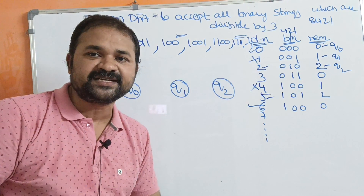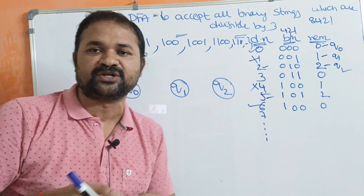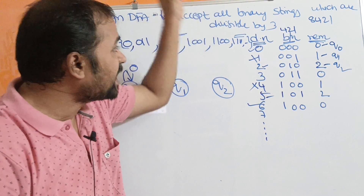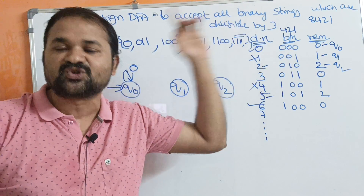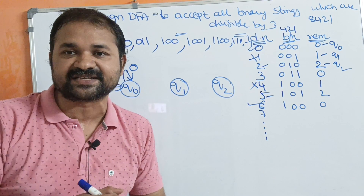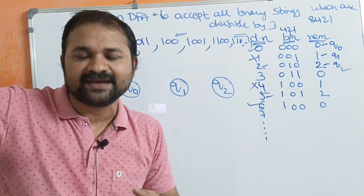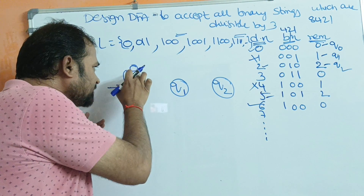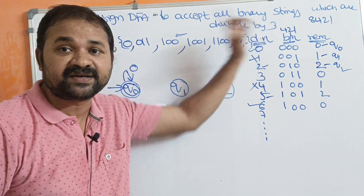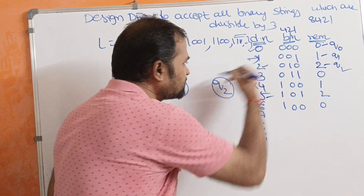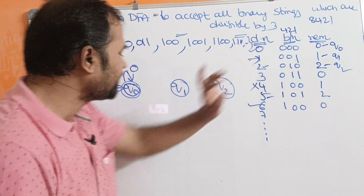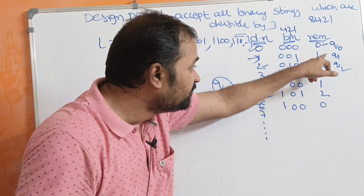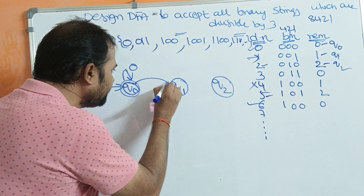Since 0 is divisible by 3, and 0 can be represented as a single 0, double 0, or triple 0, we write a self-loop on 0 at state Q0. Our DFA should accept all binary numbers divisible by 3 — that is, 0, 3, 6, 9, 12, and so on — which all produce remainder 0. So Q0 becomes the final state. Now, focusing on decimal 1 (binary 001): Q0 on 0 stays at Q0, then Q0 on 0 stays at Q0 again, then Q0 on 1 moves to state Q1.